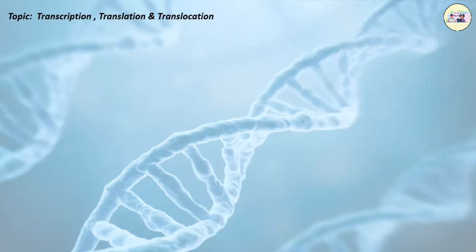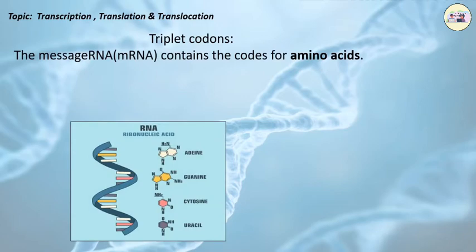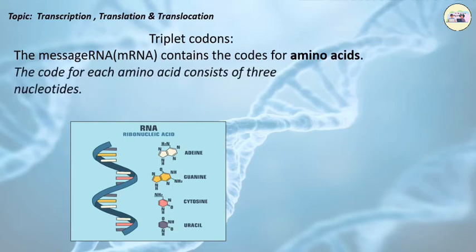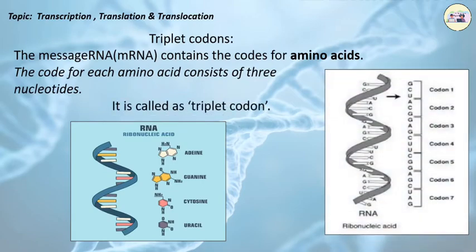Before learning translation, we must know something. Triplet Codons: The messenger RNA (mRNA) contains the codes for amino acids. The code for each amino acid consists of three nucleotides. It is called a Triplet Codon.